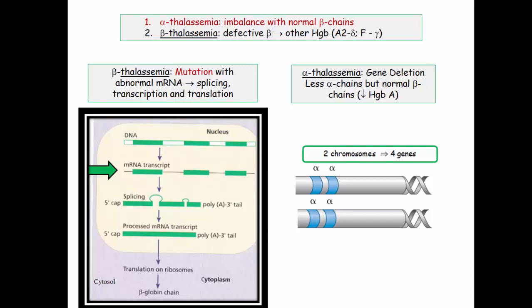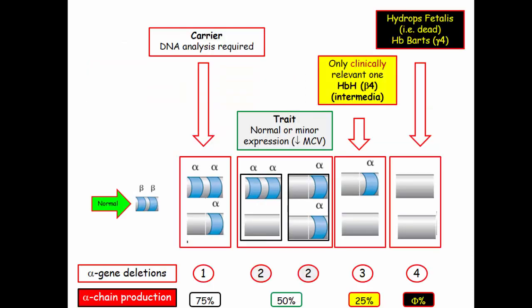Compare and contrast with alpha thalassemia: two chromosomes and four genes. The operative phrase with alpha thalassemia is gene deletion. You can delete one, two, three, or all four genes with different clinical manifestations. The number of deletions characterizes the severity of the disease.